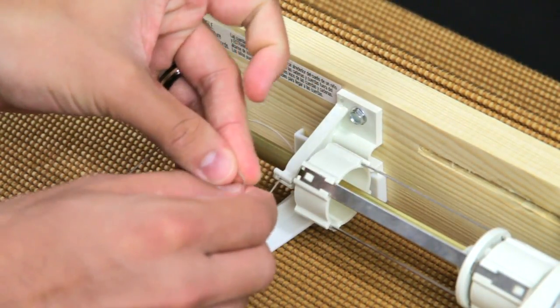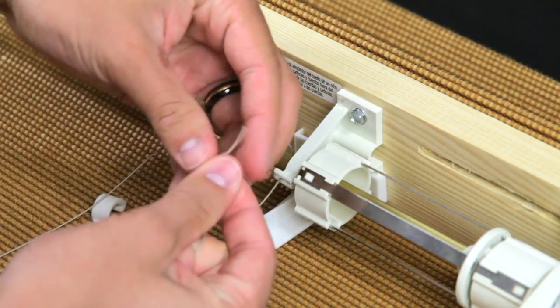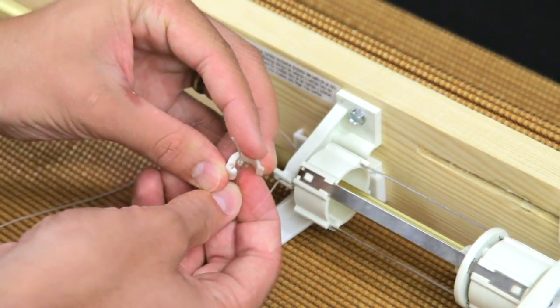Tie a knot 1½ inch from the end of the string. Attach the retainer clip and snap onto the rod as shown. Repeat this process for all other strings.